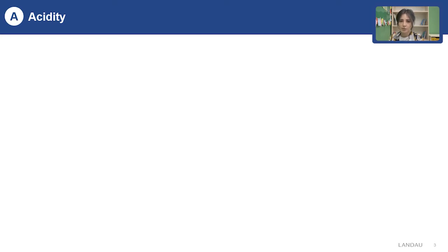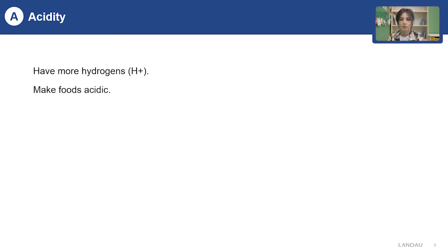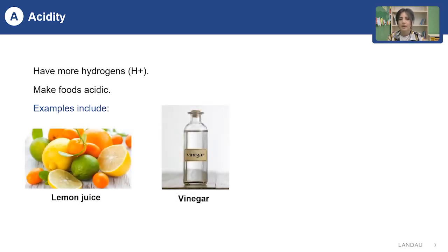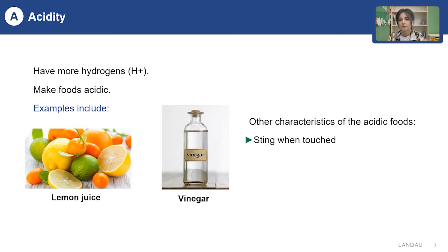In order to answer this question, you first have to know what acidity and alkalinity are. The term acidity describes the amount of acids in a solution, making our foods more acidic, and they hold more hydrogen ions. Examples are lemon juice and vinegar. When you touch them, they feel stinging, they taste sour, and if they combine with metals, they have a strong reaction.